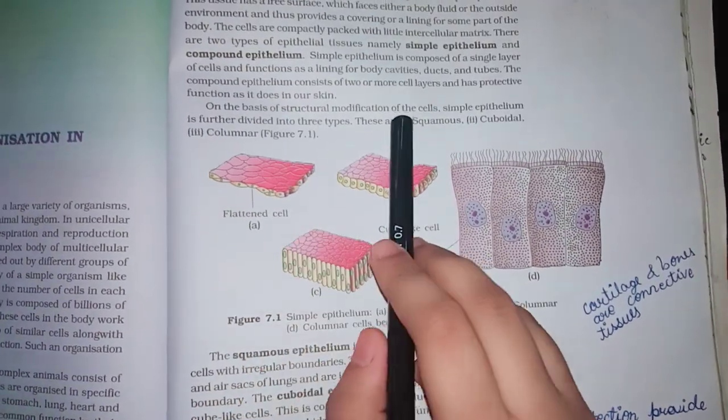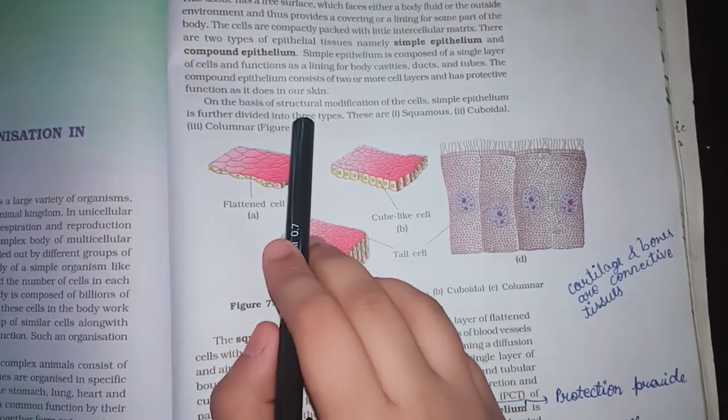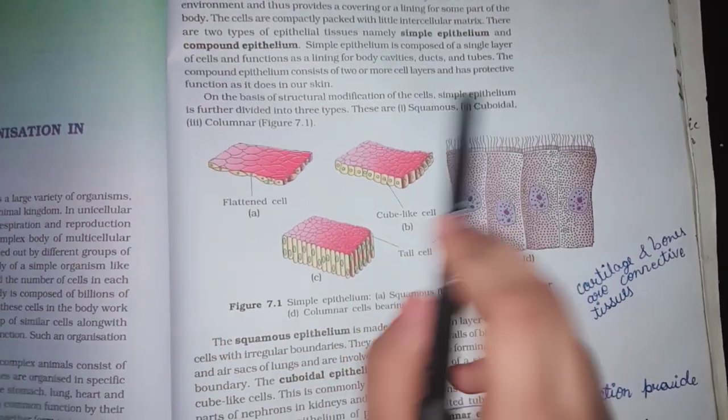On the basis of structural modification of the cells, simple epithelium is further divided into three types. These are squamous, cuboidal, and columnar.